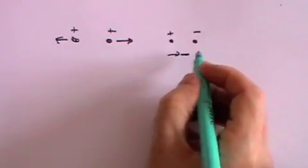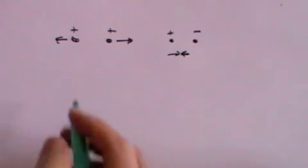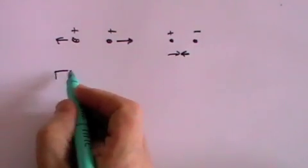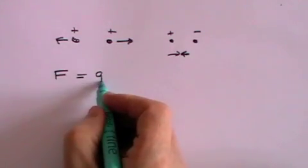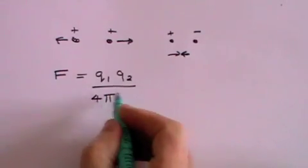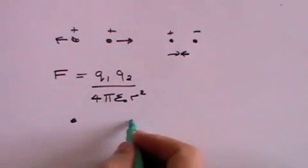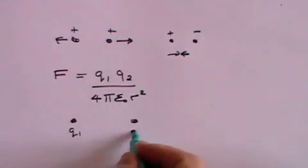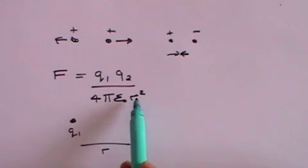The actual force of attraction is given by the Coulomb law which is simply that F, the force, is equal to Q1 Q2 over 4 pi epsilon naught R squared, where Q1 and Q2 are the sizes of the charges in Coulombs and R is the distance between them. You can see that the force falls off as R increases.